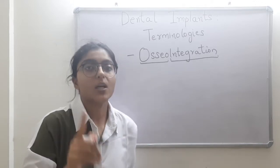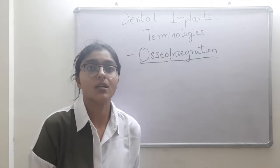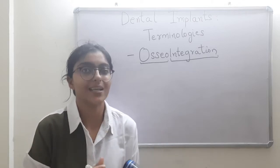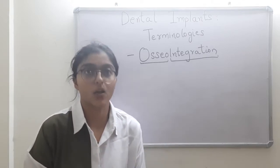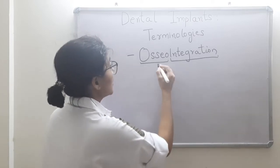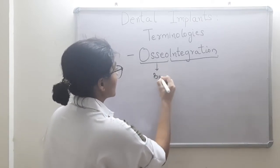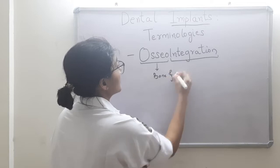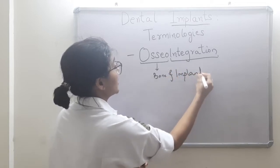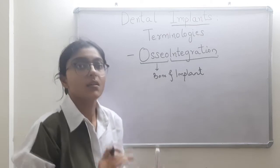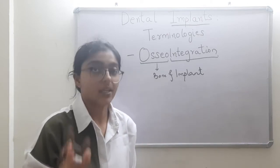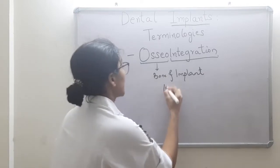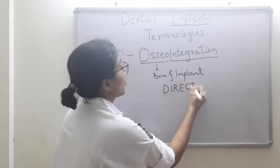Why direct contact? Because if it is a natural tooth, we have the periodontal ligament — the periodontium — in between the tooth and bone. They are not in direct contact; otherwise it would be ankylosis. But with osseointegration, the bone and implant are in direct contact.